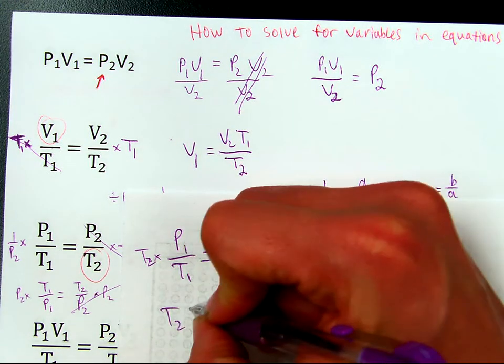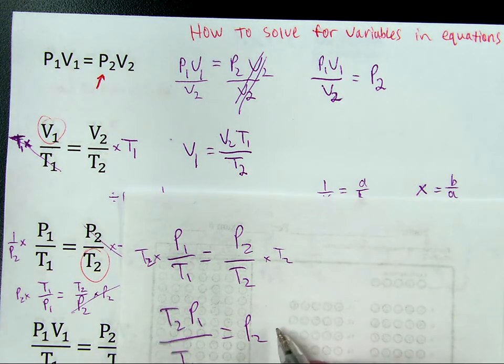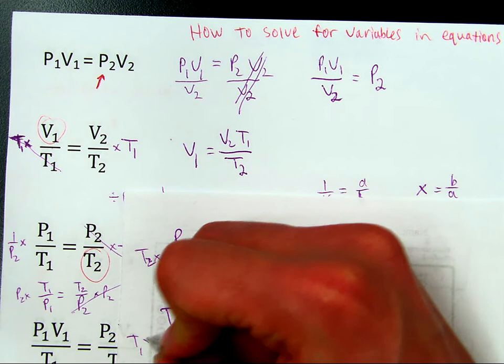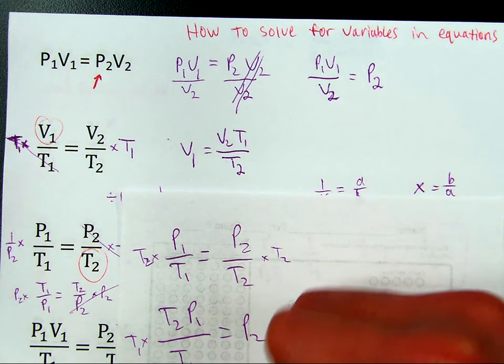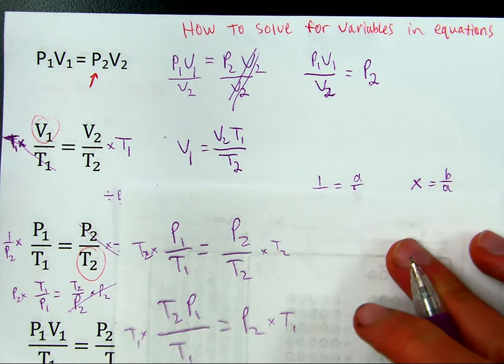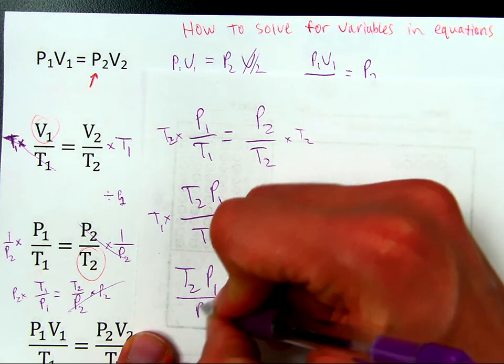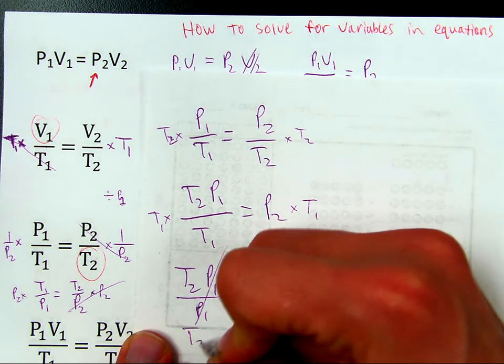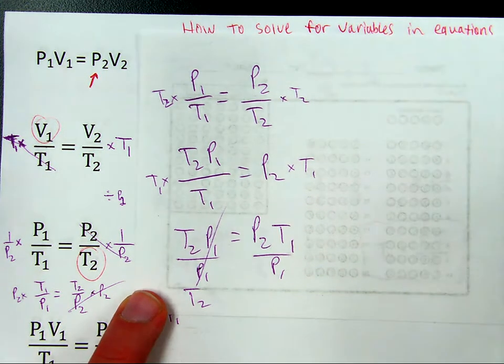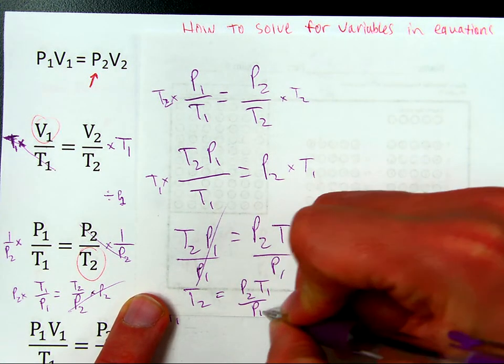Now, you have T2, P1 over T1 equals P2. And, then, you could multiply both sides by T1. T1 times T1. So, now, you have T2, P1 equals P2, T1. And, then, you could divide both sides by P1. And, this would give you T2. Let me make sure you can actually see that. T2 is equal to P2, T1 over P1.